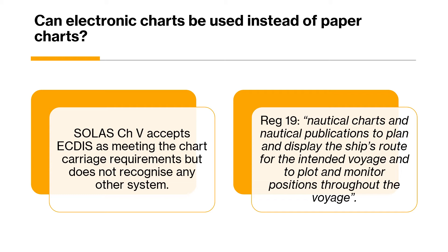The third question surveyors often ask is: can electronic charts be used instead of paper charts? In SOLAS Chapter 5, which deals with safety and navigation, the regulation accepts ECDIS as meeting the chart carriage requirements for all ships. The regulation states that nautical charts and nautical publications must be used to plan and display the ship's route for the intended voyage and to plot and monitor positions throughout the voyage. However, SOLAS will not recognize any other electronic chart systems other than ECDIS.